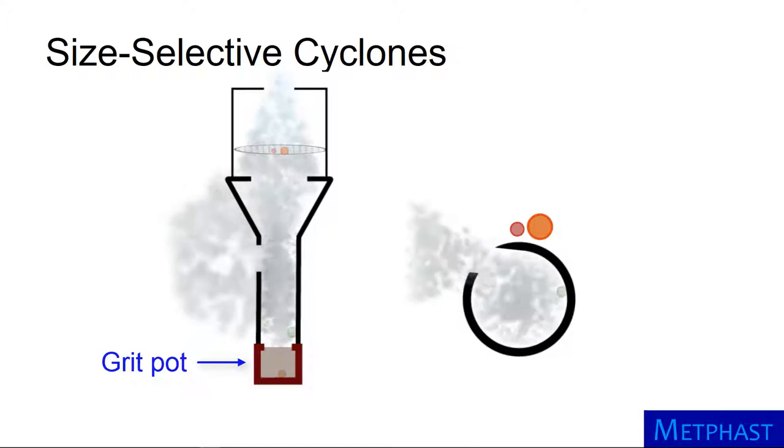All of the large green particles hit the walls and collect in the grit pot, rather than on the filter. A sampler meeting the respirable or thoracic criterion can be designed by changing the cyclone inlet and body dimensions.